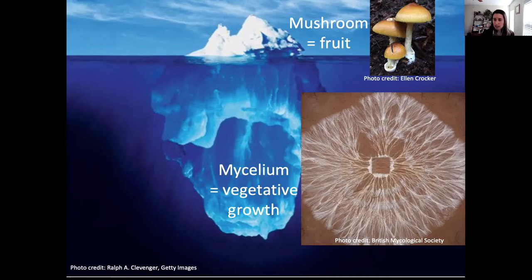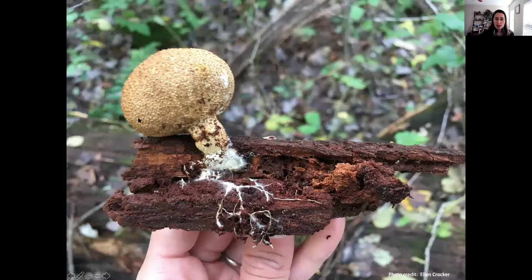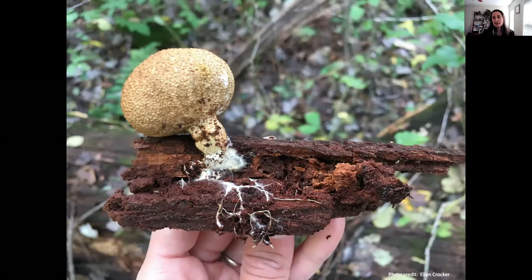Here's another puffball where you can see something you normally can't — I chipped off part of the log it was growing on, because this species likes to break down woody material. You can see these thread-like, filamentous hyphae that are the fungus growing in that log, breaking down that wood. Fungi are like us: they don't photosynthesize; they have to get their food from something else, so typically they're breaking down plant material.